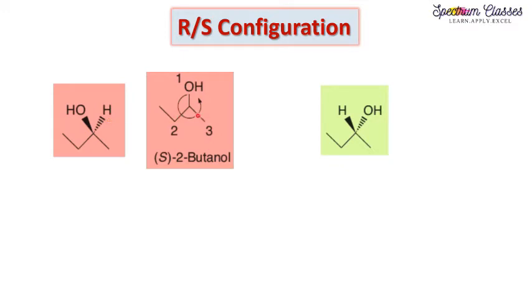First we decide priority according to the Cahn–Ingold–Prelog sequence rules. Oxygen has a higher atomic number than carbon, so OH gets first priority. The ethyl group — carbon attached to another carbon — gets second priority. The methyl group — carbon attached to three hydrogens — gets third priority. Hydrogen is the fourth priority group, not shown here.